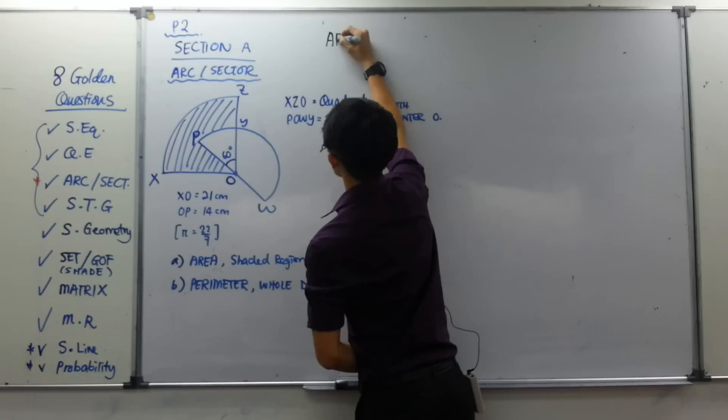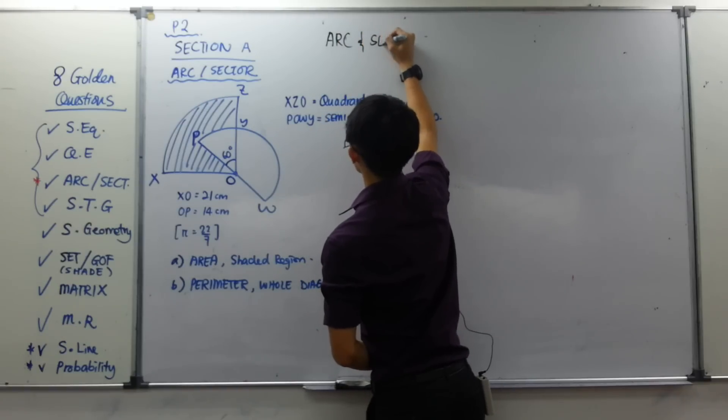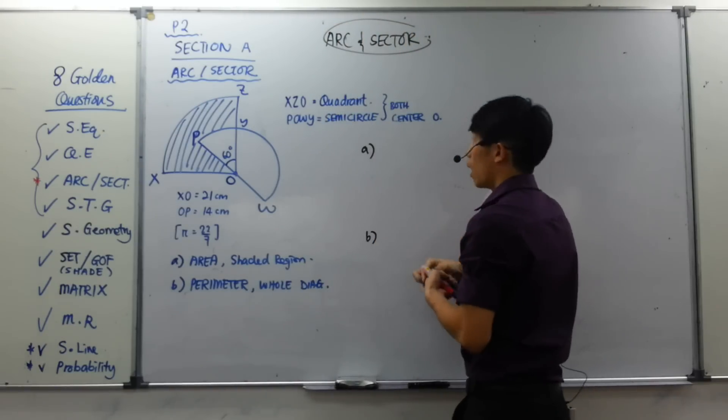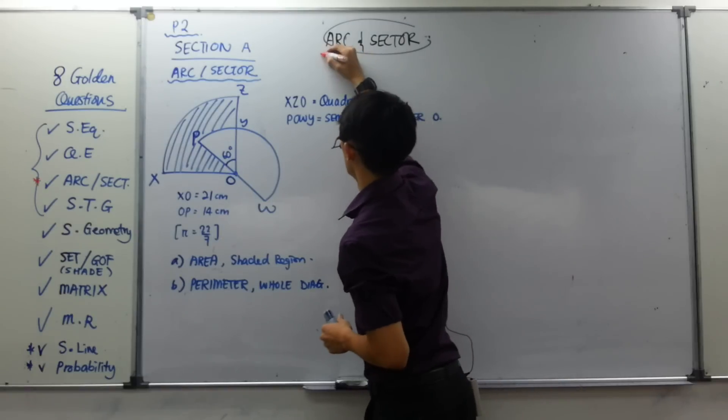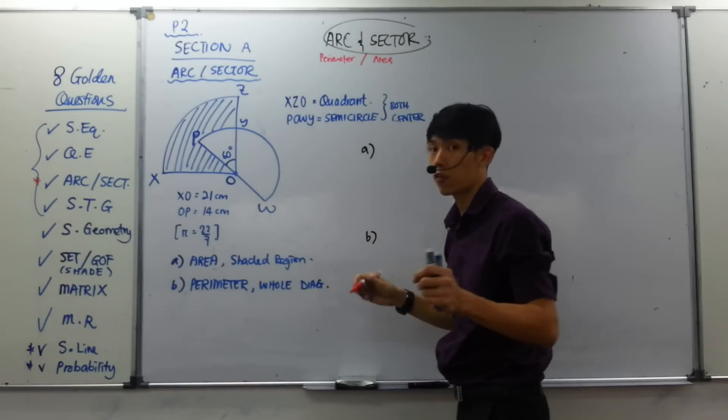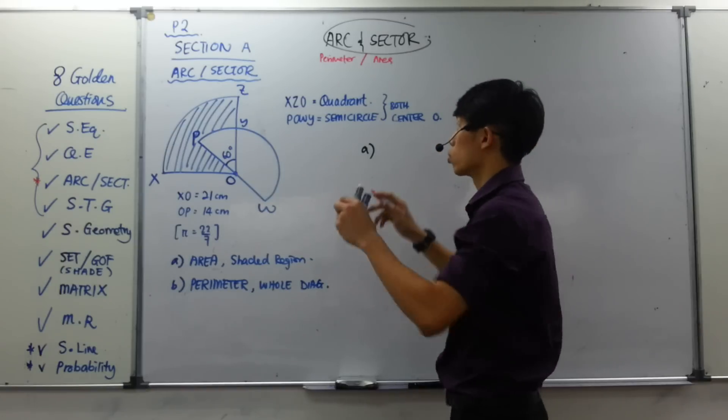So I write a title, the title is called Arc and Sector. Based on Arc and Sector, just go through these 2 names here. Arc, we name it as the side, or maybe in other words, perimeter. And sector, sometimes we name it as area as well. But of course, they are part of it only, it's not the whole thing.